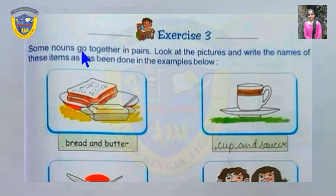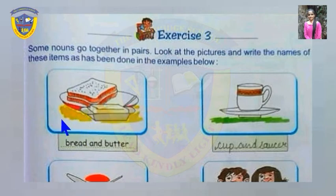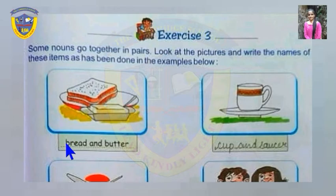Exercise three: remember, some nouns go together in pairs. Look at the pictures and write the names of these items, as done in the examples. You have to write the names of the things shown. In the first picture, the answer is 'bread and butter'. Take care about capital letters — since these are common nouns, write them with small letters, not capital.